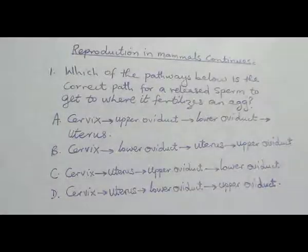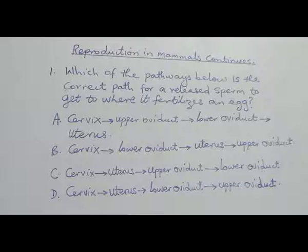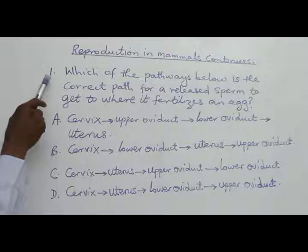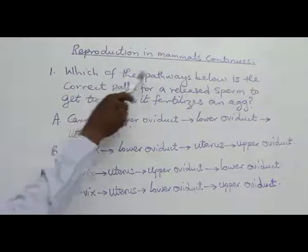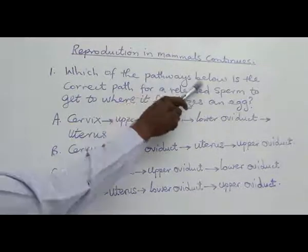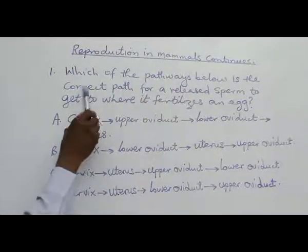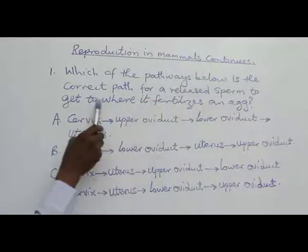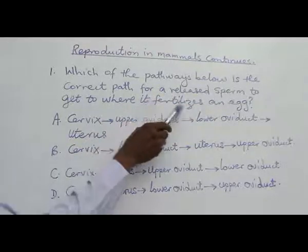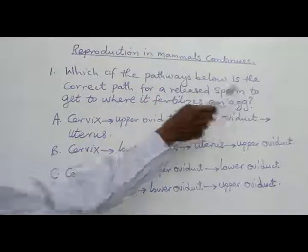We are continuing with Reproduction in Mammals. Let's look at some more examples of questions. Question 1: Which of the pathways below is the correct path for a sperm to get to where it fertilizes an egg?